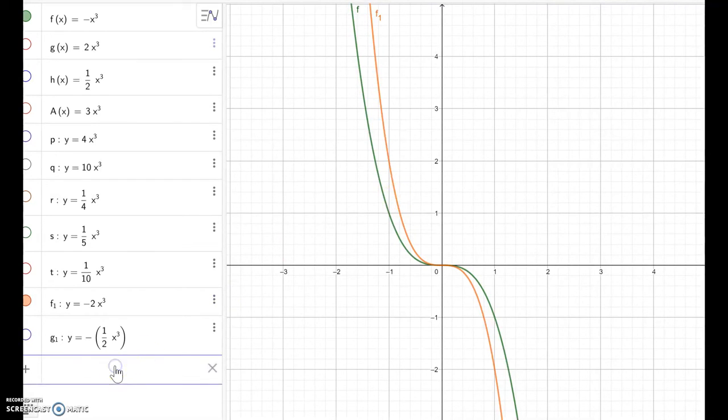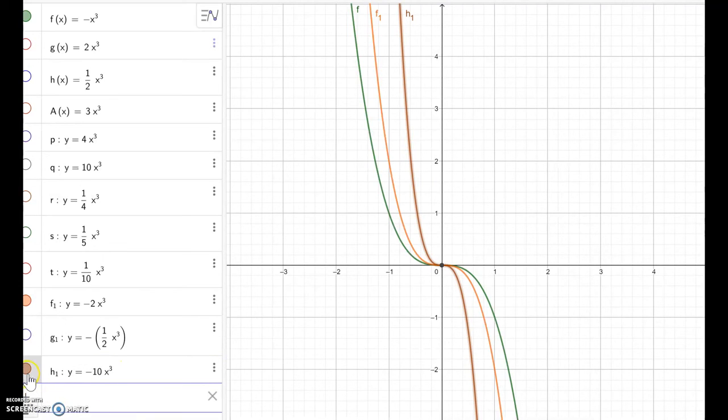So then now you can conjecture. If I make y equal to maybe negative 10 x to the cubic power, then it is much closer to y-axis here. Right? Like this.